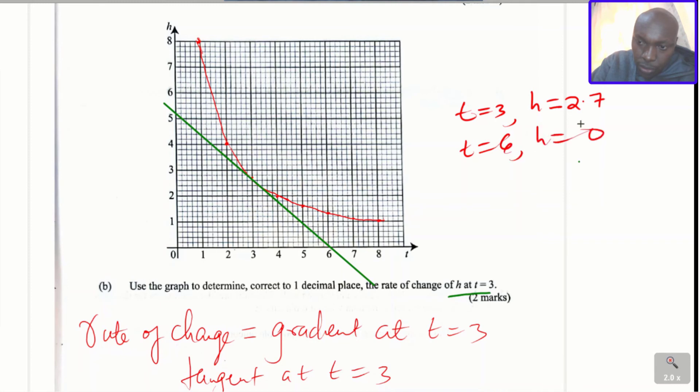h is equals to 0. Now when you get these two points, the two points will be (3, 2.7) and (6, 0). So we use these two points to calculate the gradient.